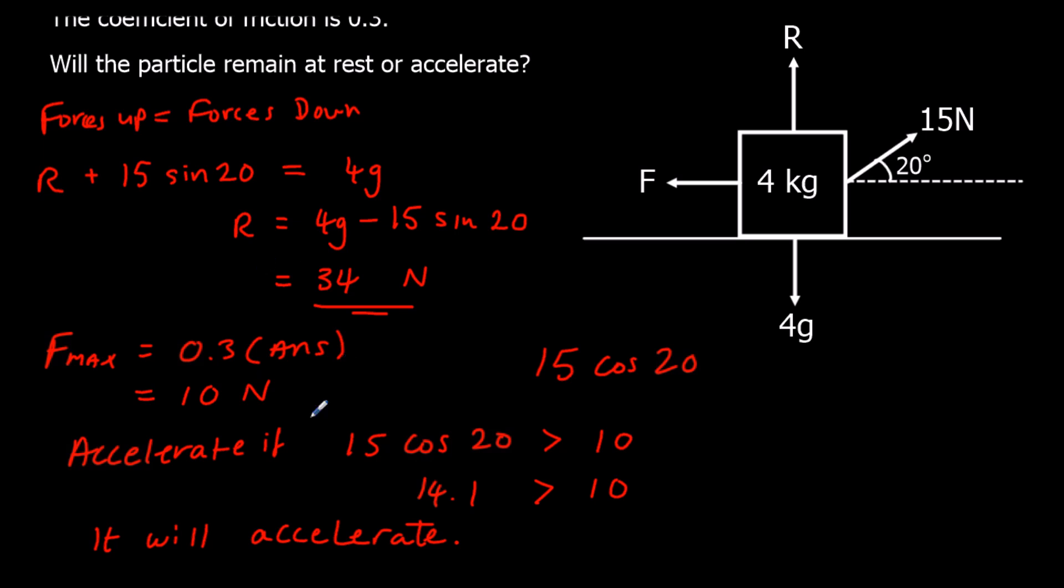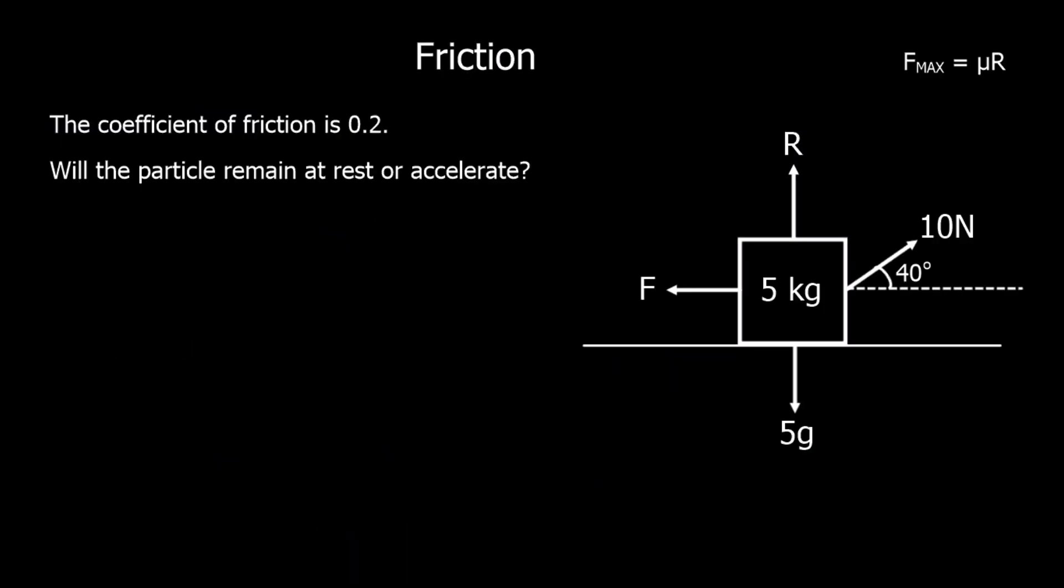Because friction can take its maximum value of 10, but that's not big enough to oppose the motion. Because the force to the right is 14.1.